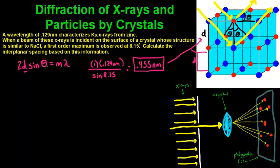So now we have d but we don't have theta. Basically, you're just going to rearrange it so that it looks like this. Theta equals m, which is our first order maximum, times the wavelength, 0.129 nanometers, divided by 2d.